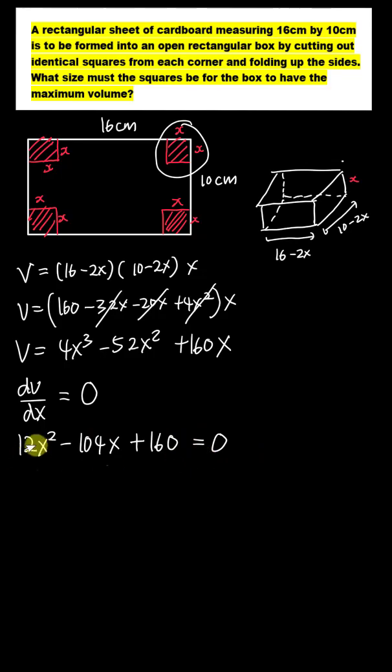I will make the numbers smaller by dividing everything by 4 here, so this one will give me 3x squared, this one divided by 4 will give me negative 26x, and this one divided by 4 will give me 40 equals 0. And then we just factorize this one normally, so this one is 3x and x.